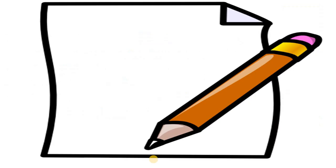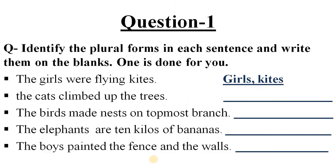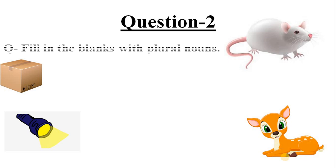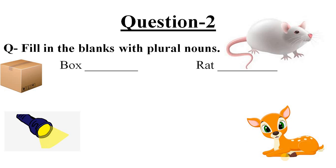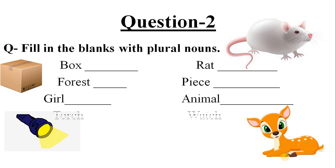Now it's practice time. Be ready with your pen and a notebook to note the questions which you are getting from home. In the first, identify the plural nouns in each sentence and write them in the blanks — one is done for you. The second is: fill in the blanks with plural nouns, and the words are box, cat, forest, peas, girl, animal, torch, watch, etc. Now keep on learning and practicing. Bye.